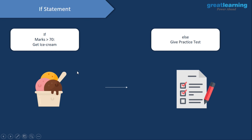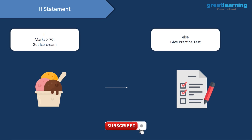Let's look at another example. Let's say you have your main exam coming up and you go ahead and give a mock exam. In that mock exam, if you score greater than 70 marks, then your parents tell you that they'll buy you an ice cream. But on the other hand, if you score less than 70 marks, then you would have to give another mock test. This again is an example of an if-else statement.